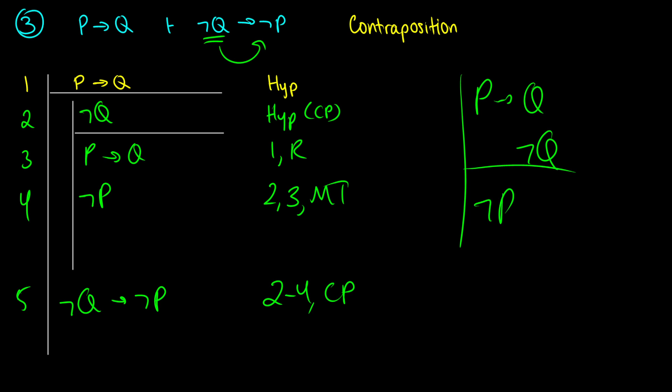You might need to expand the rules to show them all out if your assignment hasn't given you modus tollens yet — then you can go back to the video and there will be a few lines you put in between here to get this result. We've already proved that if we have ¬Q and P→Q we get ¬P, so we're just taking a shortcut here and not including the intermediate lines. That's how we can prove contraposition.